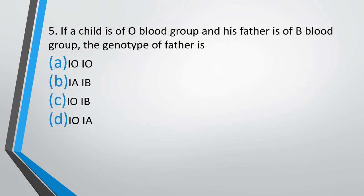Question number 5. If a child is O blood group and his father is B blood group, the genotype of father is: IoIo, IaIb, IoIb, or IoIa? The child is O and the father is B. The correct answer is option C — the father's genotype is IoIb.